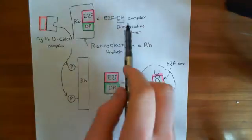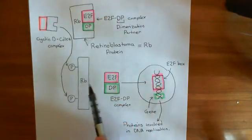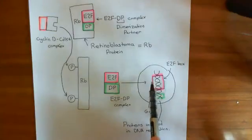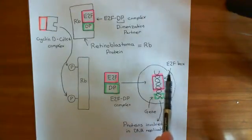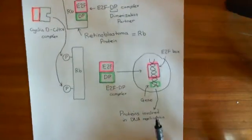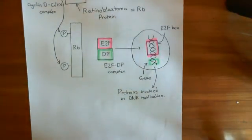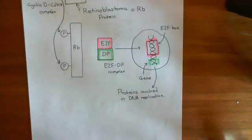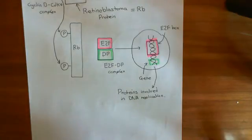The E2F-DP complex would now be free in the cytoplasm, and it would be continuously going into the nucleus and binding to E2F boxes, causing an increase in transcription of the genes responsible for DNA replication. So you would be continuously dividing the nuclear material, continually causing division of that cell — uncontrolled cell division — which is one of the main characteristics of cancer, or at least of the cancer genesis pathway.